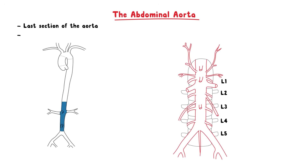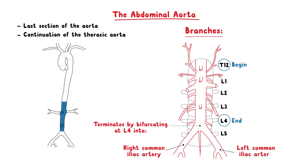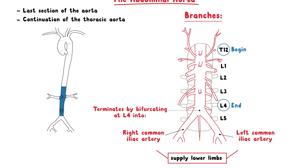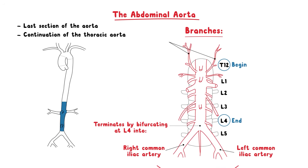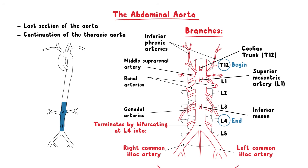The abdominal aorta is the last part of the aorta and is the continuation of the thoracic aorta. It begins at the level of T12 and terminates at the level of L4, where it bifurcates into the right and left common iliac arteries that supply the lower limbs. The branches of the abdominal aorta in descending order are the inferior phrenic arteries, celiac trunk, superior mesenteric artery, middle suprarenal arteries, gonadal arteries, inferior mesenteric artery, median sacral artery, and lumbar arteries.